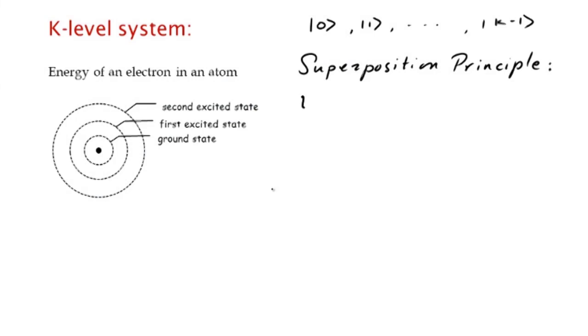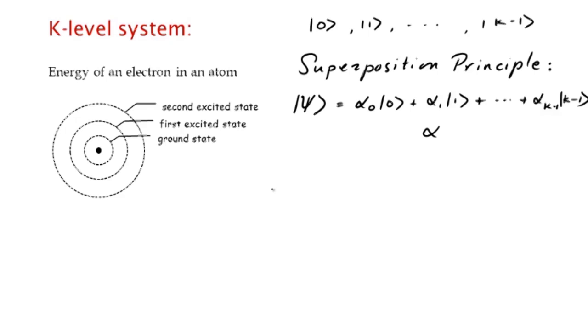Now the superposition principle, which is one of the basic axioms of quantum mechanics, says that in general the state of the system is going to be any linear superposition of these allowable states. So the general state is a linear superposition of 0 through k minus 1, each with its amplitude alpha sub j, which is a complex number. These amplitudes are normalized so that the summation of |alpha_j|² equals 1, for j equal to 0 to k minus 1.